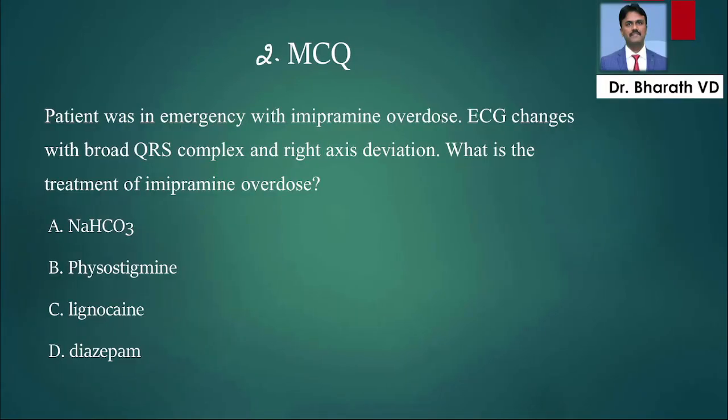Patient was in emergency with imipramine overdose. What is imipramine? It's a tricyclic antidepressant used for major depression, to manage some anxiety problems, and also used in nocturnal enuresis in children as adjunct treatment. ECG showed broad QRS complex and right axis deviation. What is the treatment of imipramine overdose? The answer is sodium bicarbonate.